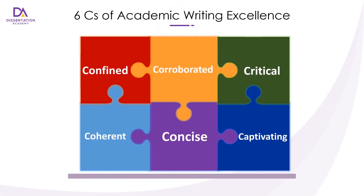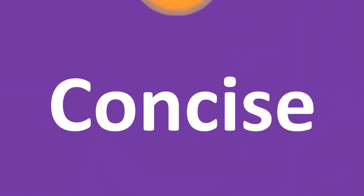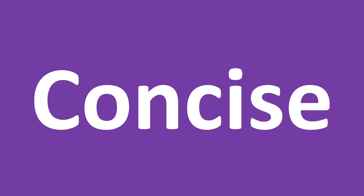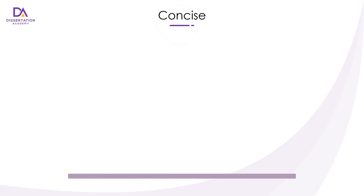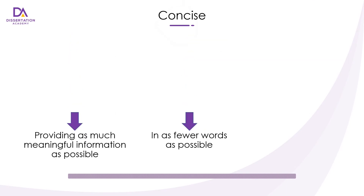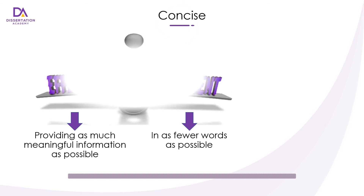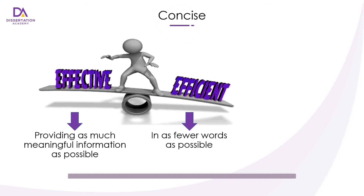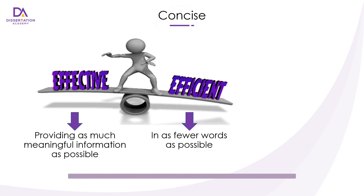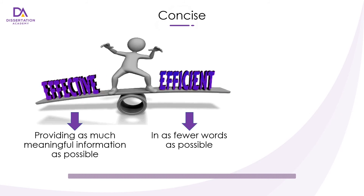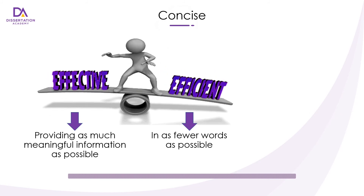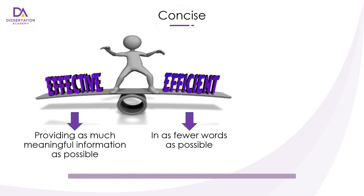The fifth C is concise. Being concise is about effectiveness and efficiency in communication. In more specific terms, it involves providing as much information as possible — which is effectiveness — in as few words as possible — which is efficiency. It is a balancing act because sometimes to be effective we have to use too many words, which is not efficient, and if we are too efficient, we may end up not being very effective.